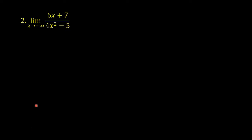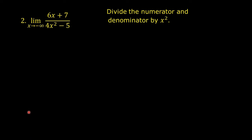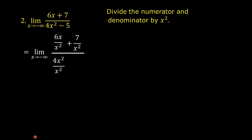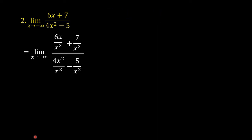Example number 2: the limit of 6x plus 7 over 4x squared minus 5 as x approaches negative infinity. Divide the numerator and the denominator by x squared — this is the highest power of x appearing in the denominator. This equals the limit of (6x/x² plus 7/x²) divided by (4x²/x² minus 5/x²) as x approaches negative infinity.